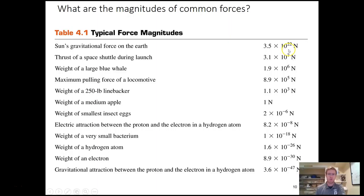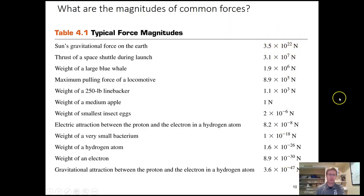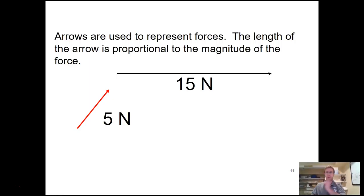Here's a fun table of different magnitudes of forces. The sun's gravitational force on the Earth is huge — 3.5 × 10²² newtons. The weight of a blue whale is around 10⁶ newtons, a linebacker playing football around 10³ newtons, and an apple just about 1 newton. On the small end, the electrical attraction between a proton and electron in a hydrogen atom is 10⁻⁸, the weight of a bacterium is 10⁻¹⁸, and the weight of an electron is 10⁻³⁰. There's a huge range of forces in the natural world.